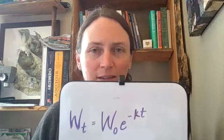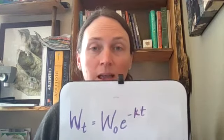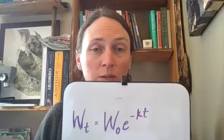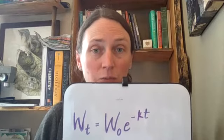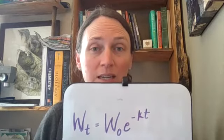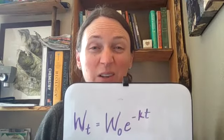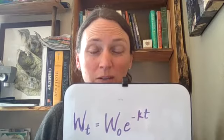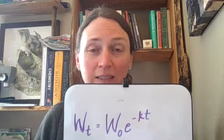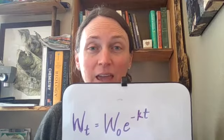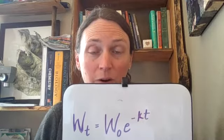The weight of leaf litter, because I look at leaf litter decomposition, at some time in the future — W sub T — can be modeled or predicted based on the initial weight times E to the negative K T. See how similar that is to the exponential growth model, except that instead of E to the RT, it's E to the negative K T. And the negative K gives us the decomposition, the decay, the negative part.